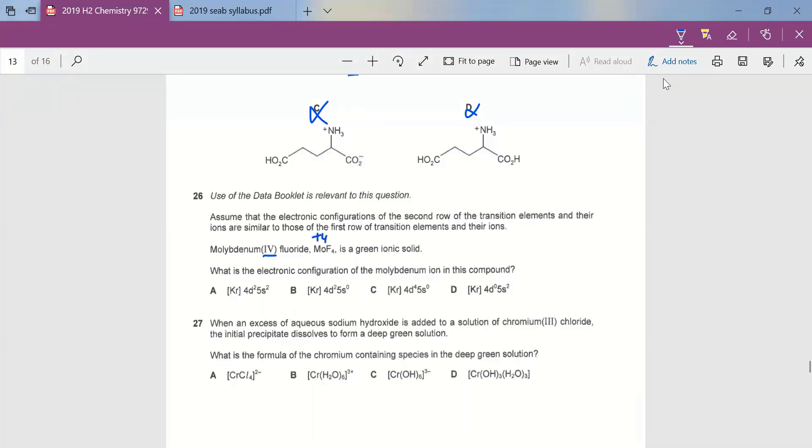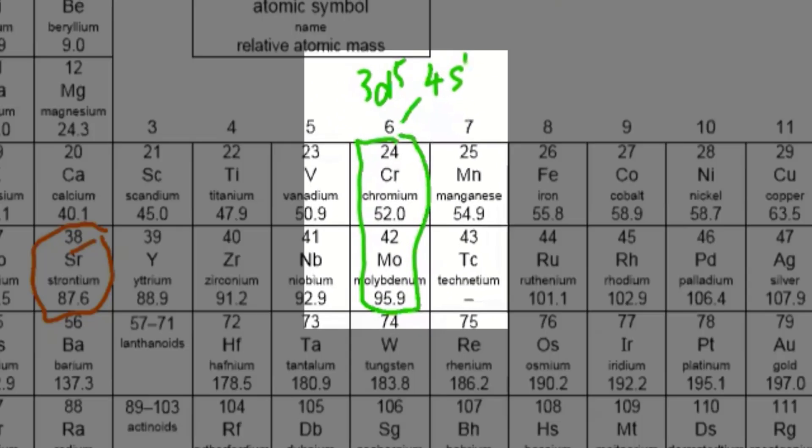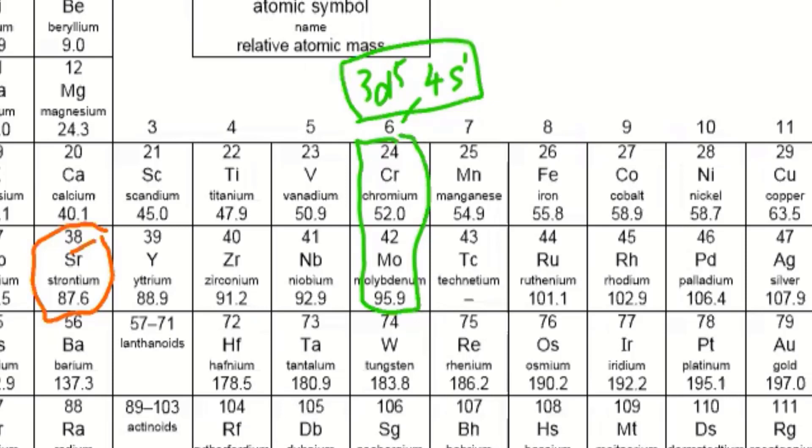Okay, what is the electronic configuration of this MO ion? If you look at the data booklet, your MO is directly below chromium, and chromium, we know the electronic configuration is one of the two special cases. 4S1 is partially filled so that you can have a half-filled 3D orbital.